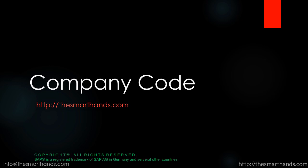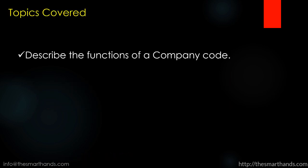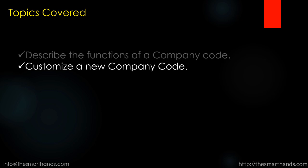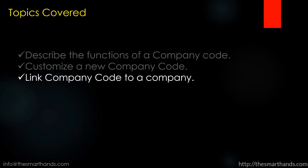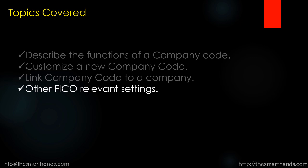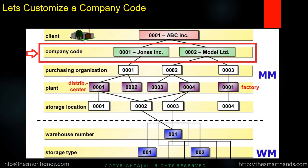Starting with this video, we'll create our own org structure for doing our exercise for the warehouse management course. First, we'll create our own company code and try to keep everything separate from the other standard company codes and plants in the SAP system. So let's start with the company code. In this video, we'll start with creating our own company code, and then in the next video we'll move on to the purchase org and plants.